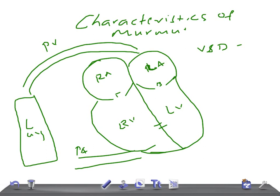ASD — atrial septal defect — presents with a soft systolic murmur in the second left intercostal space, along with wide fixed splitting of the second heart sound. The murmur is produced during contraction: when blood flows back into the right auricle through the ASD. Wide fixed splitting of the second sound is a very important point.